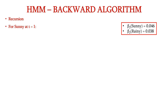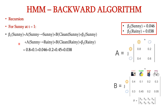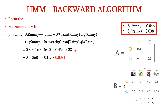Now let us apply the recursion equation for the hidden state sunny at time step t=1. Beta_1(sunny) = a(sunny→sunny) × b(clean|sunny) × beta_2(sunny) + a(sunny→rainy) × b(clean|rainy) × beta_2(rainy). Substituting: 0.8 × 0.1 × 0.046 + 0.2 × 0.45 × 0.038 = 0.0071. So beta_1(sunny) = 0.0071.